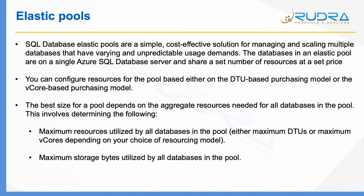At any one point of time, only one database is consuming maximum resources. You can also fine-tune by configuring each database not to exceed a certain DTU limit — for example, database A should not exceed 1000 DTUs, so the remaining 500 DTUs are available for B and C. The biggest saving is that instead of buying 3000 DTUs, you are actually buying 1500 DTUs — essentially saving 50% of the cost with Elastic Pools.